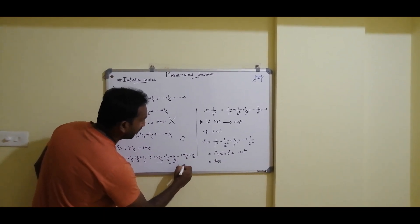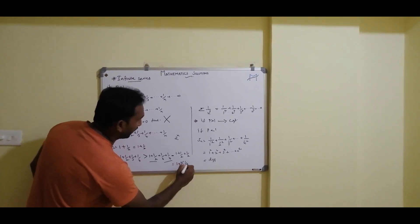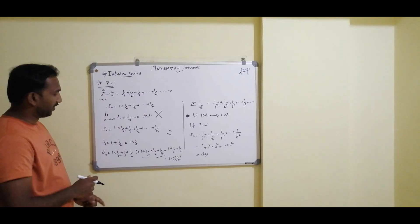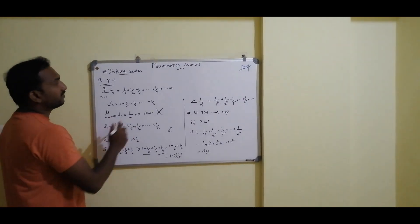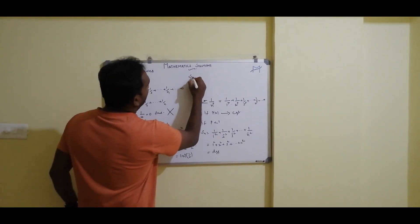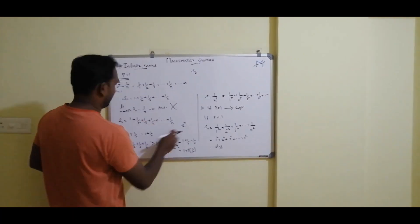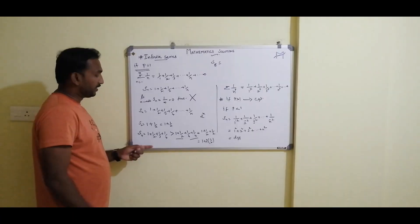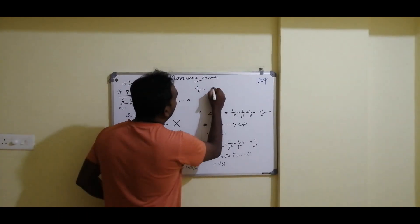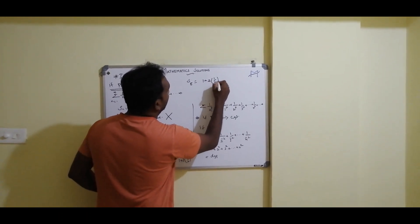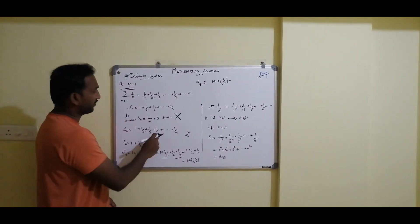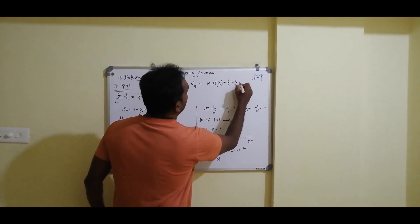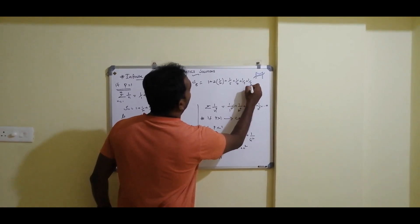Substituting N = 3, we get S8. The first 4 terms sum to more than 1 + 2×(1/2). The remaining 4 terms are 1/5 + 1/6 + 1/7 + 1/8. Replacing 1/5, 1/6, 1/7 each with 1/8, the remaining terms are greater than 4×(1/8) = 1/2.